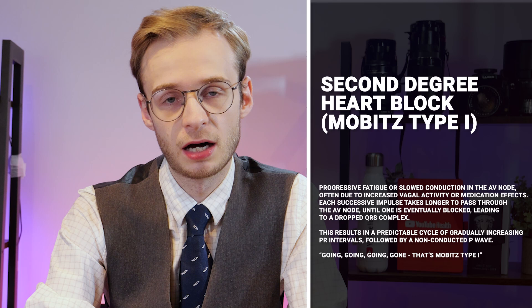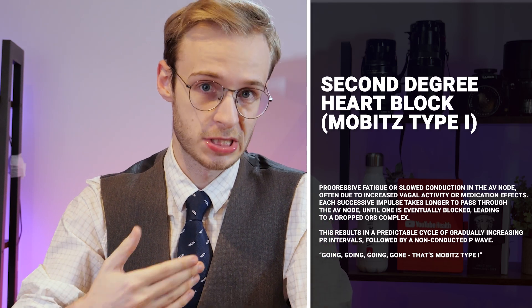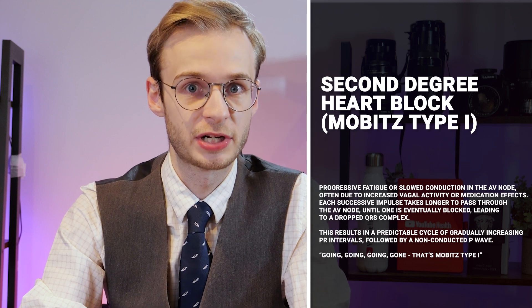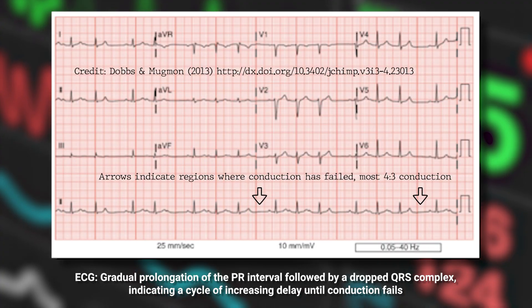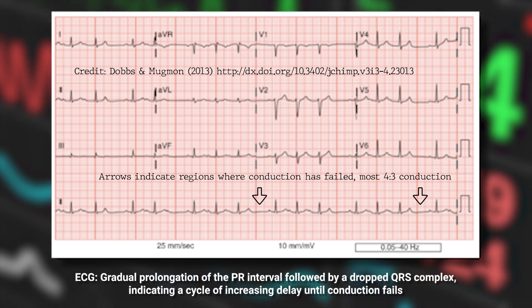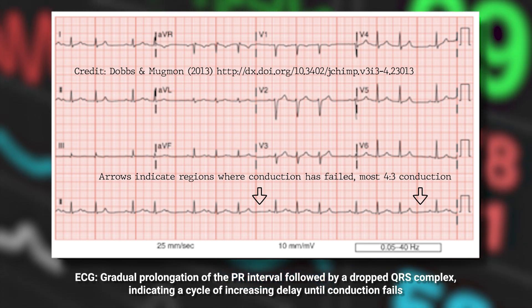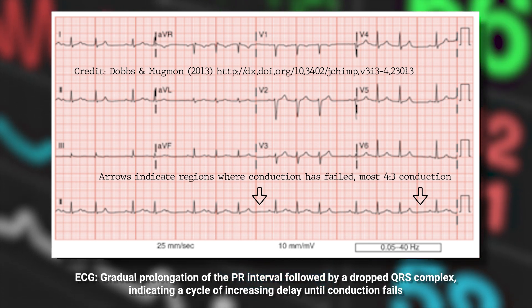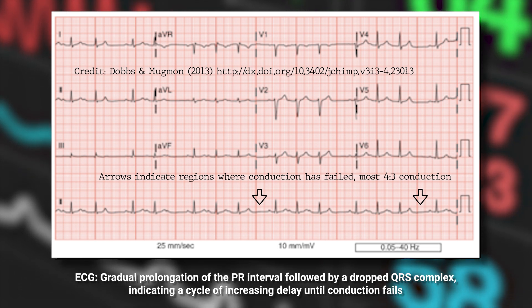Second degree heart block, Mobitz type 1 or Wenckebach, is a progressive fatiguing or slowing of conduction through the AV node. Each successive beat takes longer and longer to process through that node until one eventually gets blocked, leading to a dropped QRS complex. There's a predictable, repeating cycle of PR prolongation until a beat is missed completely. As the old rhyme tells us: going, going, going, gone — that's Mobitz type 1.